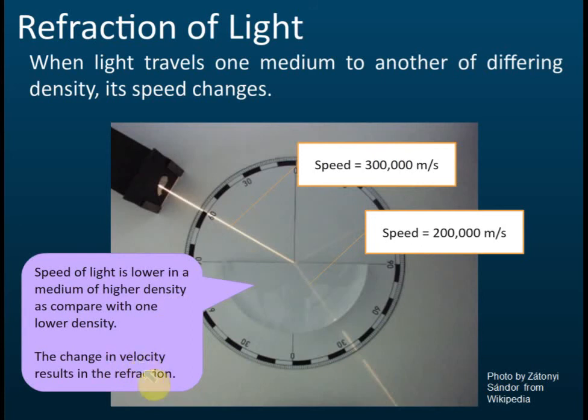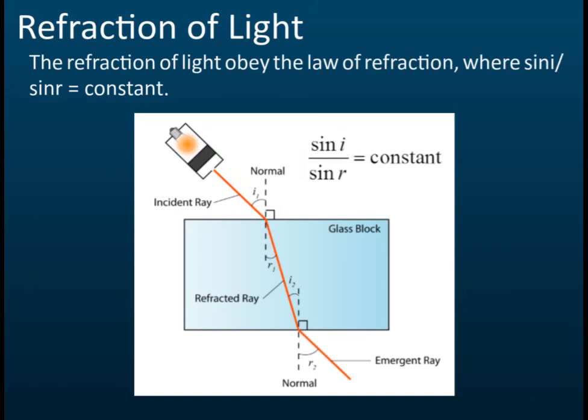The refraction is caused by the change of speed when the wave moves from one medium to another medium. Refraction of light obeys Snell's law, or the law of refraction, where sine i over sine r equals a constant. This constant is called the refractive index.